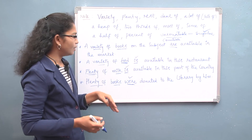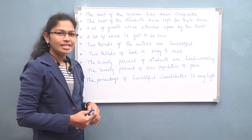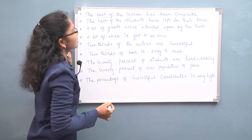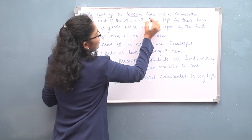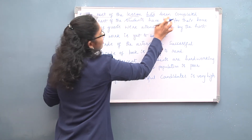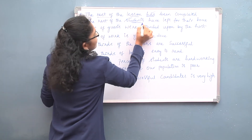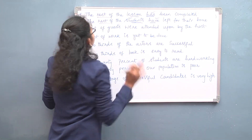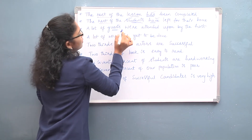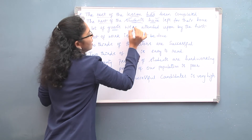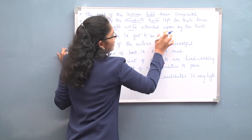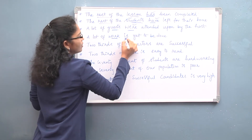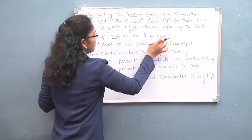More examples: 'The rest of the lesson has been completed' — lesson is singular, so 'has'. 'The rest of the students have left for their home' — students is plural, so 'have'. 'A lot of guests were attended upon by the host' — guests is countable plural, so 'were'. 'A lot of work is yet to be done' — work is uncountable, so 'is'.